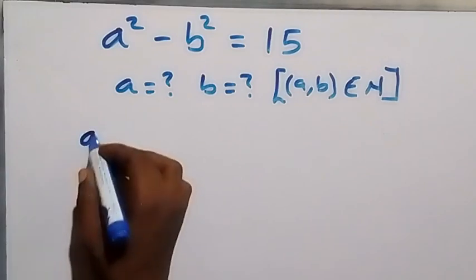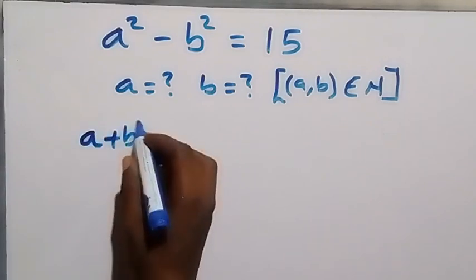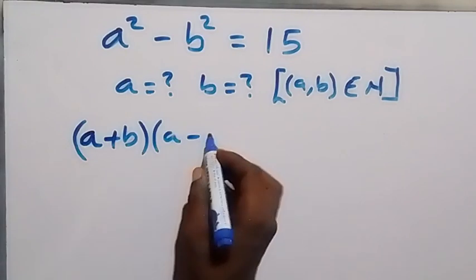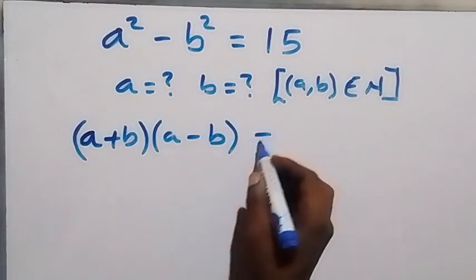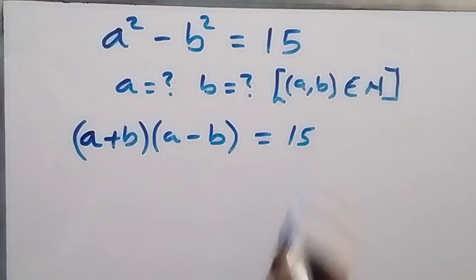Using the difference of two squares, we have (a+b)(a-b) = 15.